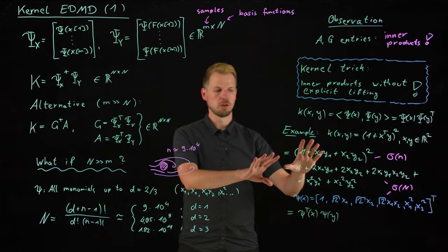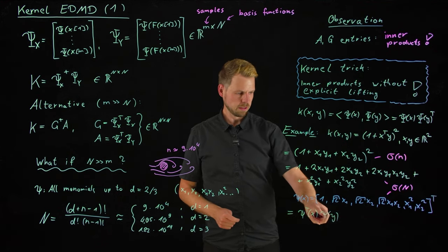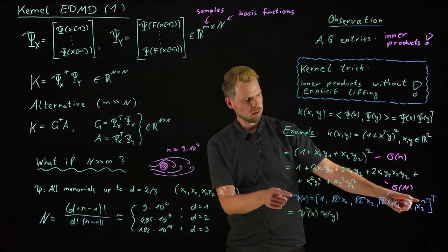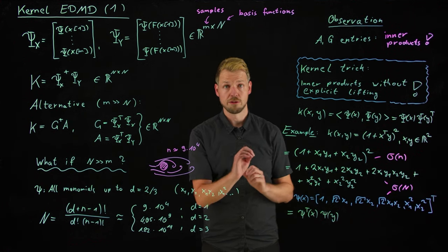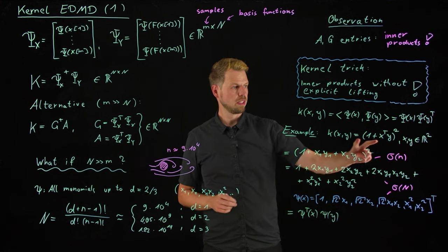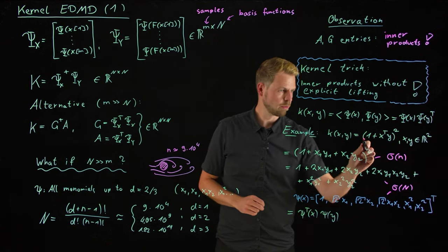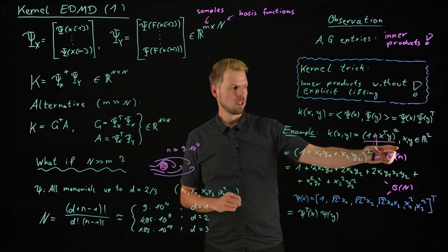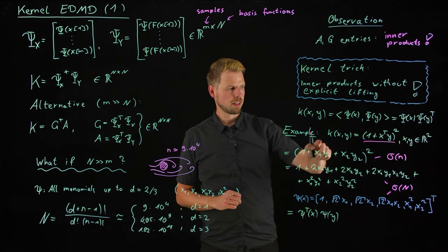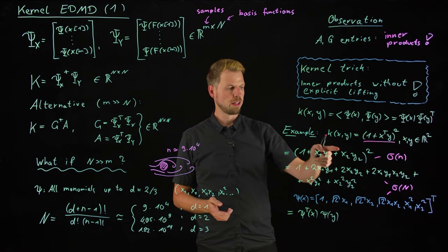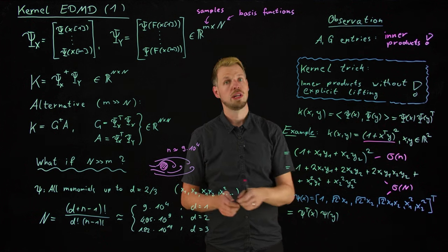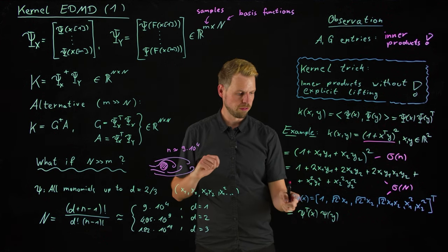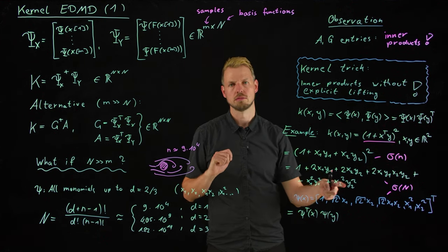So this is the kernel trick. I have computed an inner product on a feature space, but I have never visited the feature space. I have only evaluated this expression here. And so this is on the order of small n because I'm just taking the inner product in the original space, but what I get is the same as if I would lift the space to my features and then take the inner product.